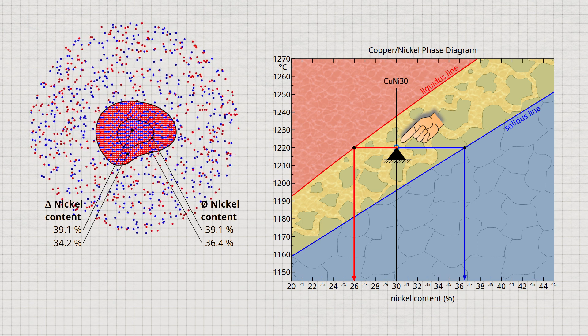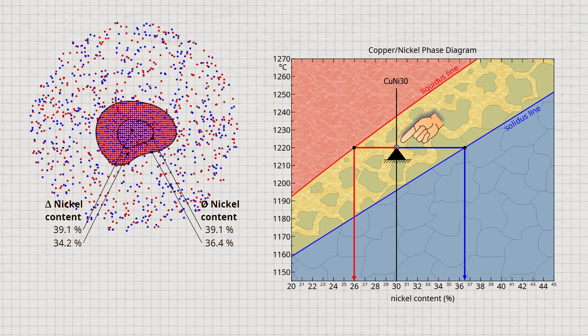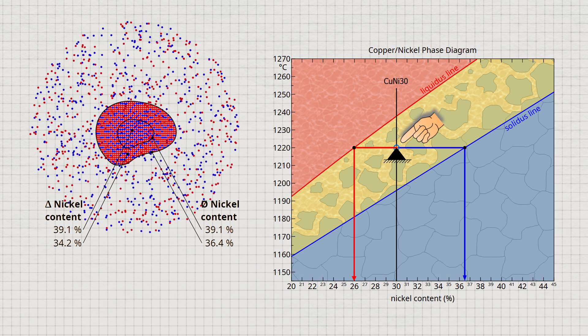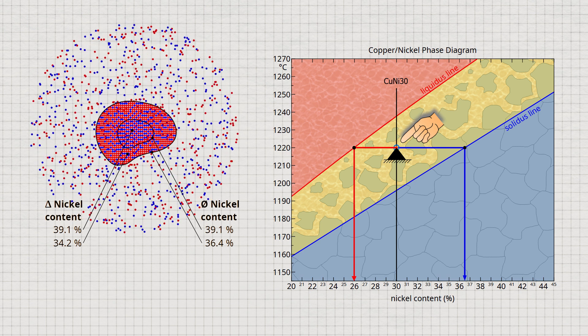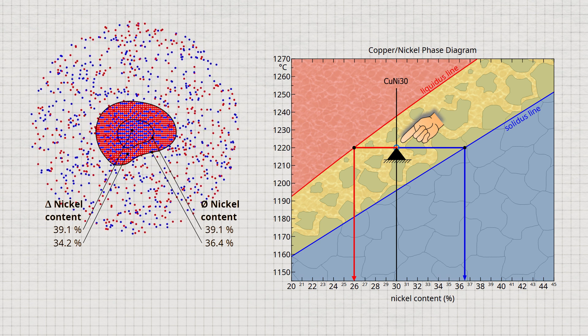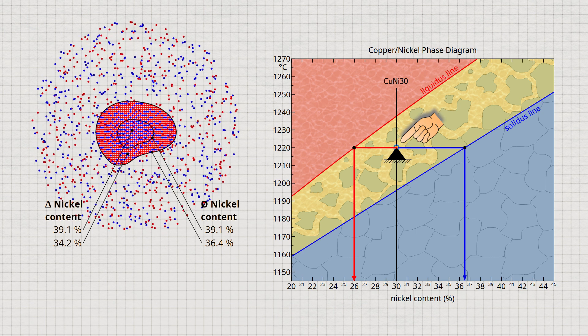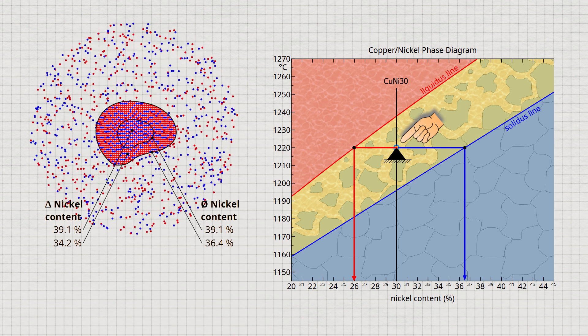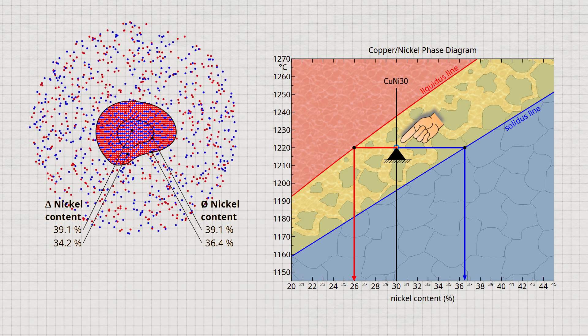This is done by determining what percentage of the alloy solidifies in a given temperature range. The nickel concentrations weighted by the solidified mass fractions must then equal the average nickel content. From this, the average nickel concentration of the solidified layers can then be determined.